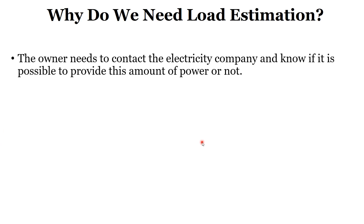Another reason is that the owner needs to contact the electricity company before building the project, to know if it is possible to provide the required amount of power. The owner must know how much electricity will be required inside the building before making a contract. For example, if one megavolt-ampere is needed, the owner will contact the electricity company to see if they can provide that amount.